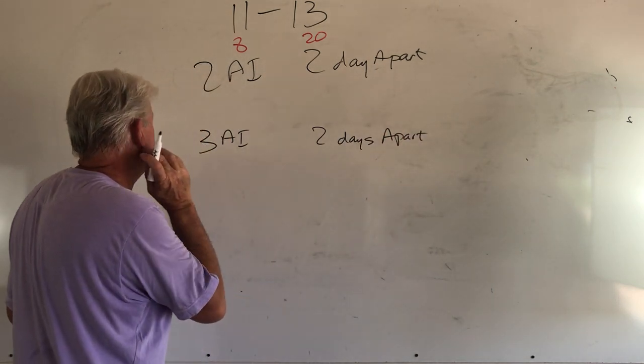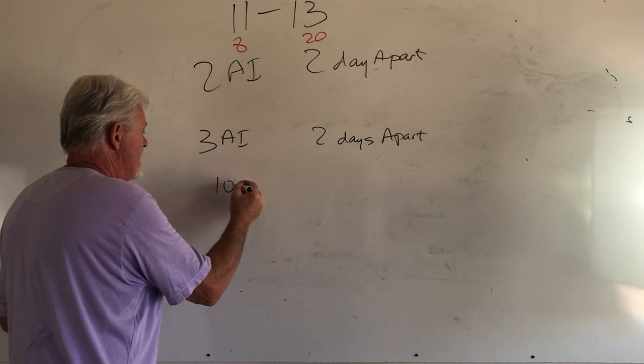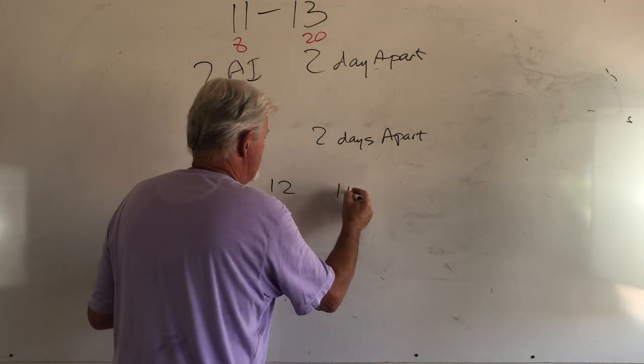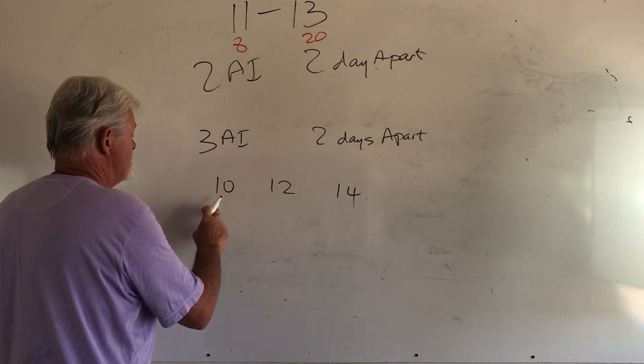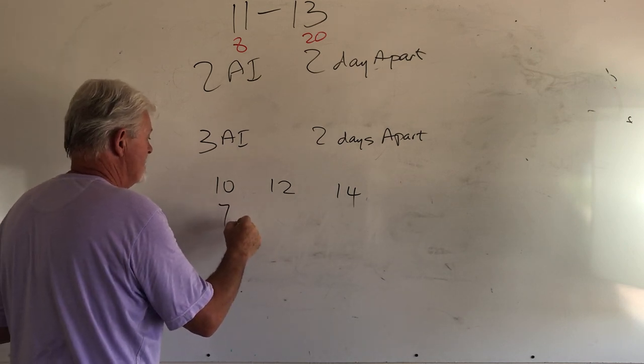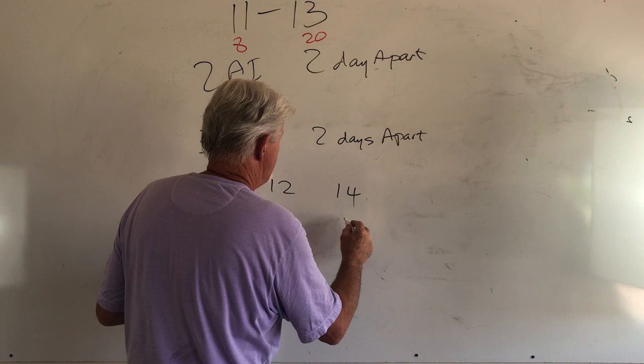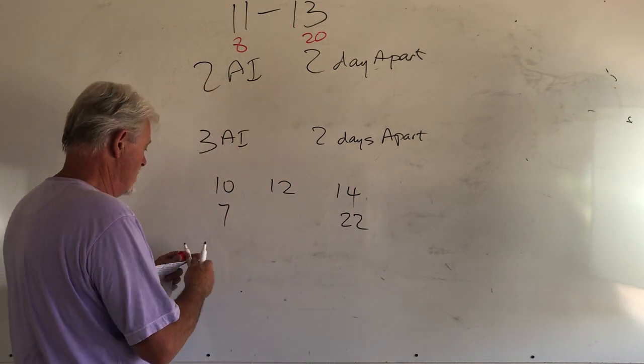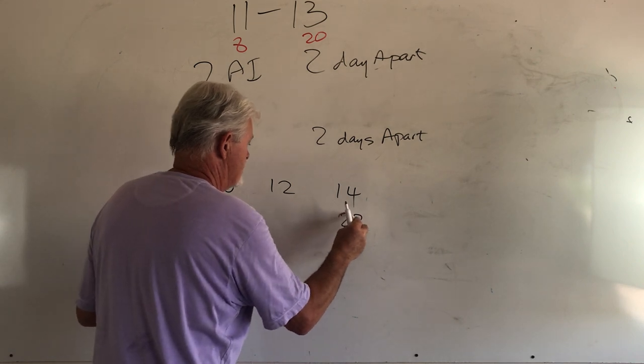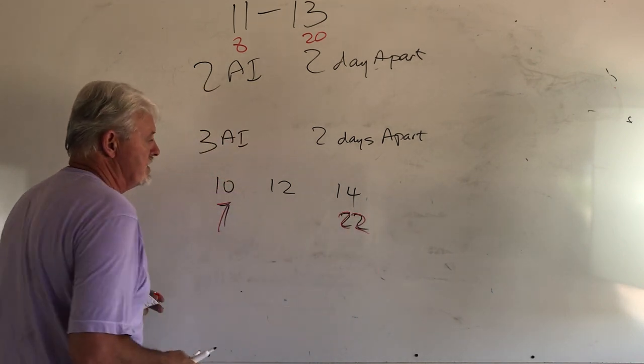So, I like to do an AI probably on day 11 and day 13 on a typical dog, with a progesterone level starting around an eight, and finishing up with a progesterone level of something around a 20. That gives you really good coverage over basically a pretty good window of opportunity.